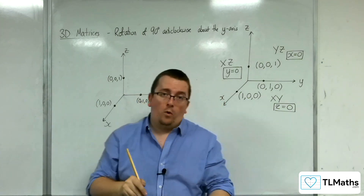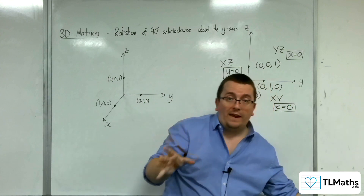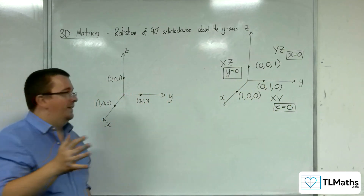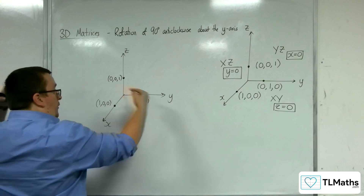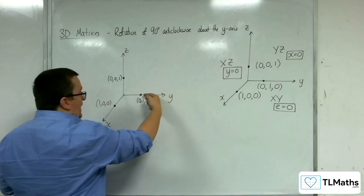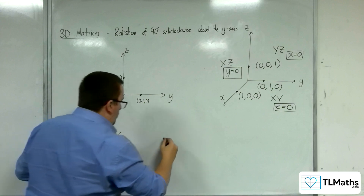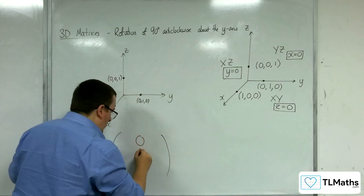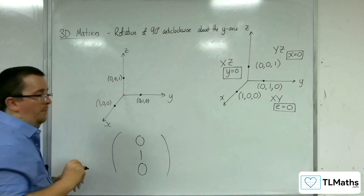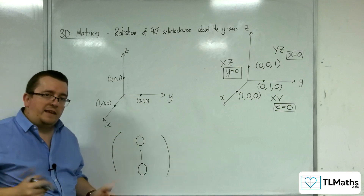So, anything that is on the y-axis remains fixed. That includes the point (0, 1, 0). So I already know the middle column of my matrix, because that remains as it is.